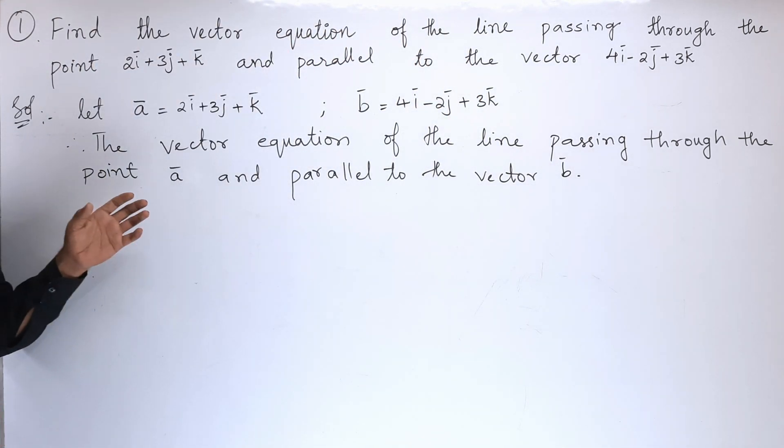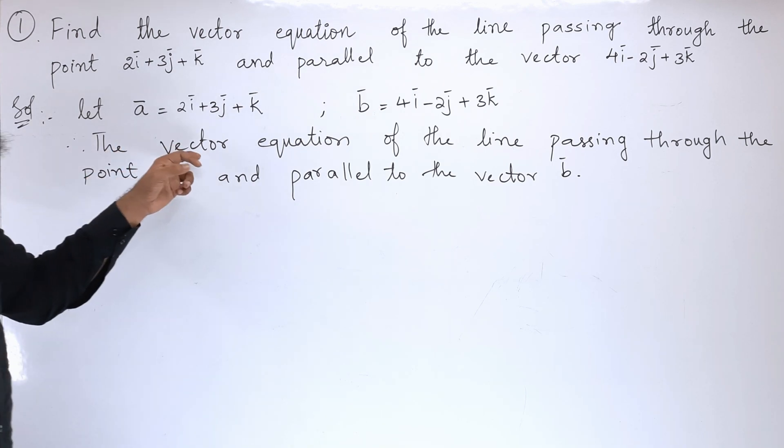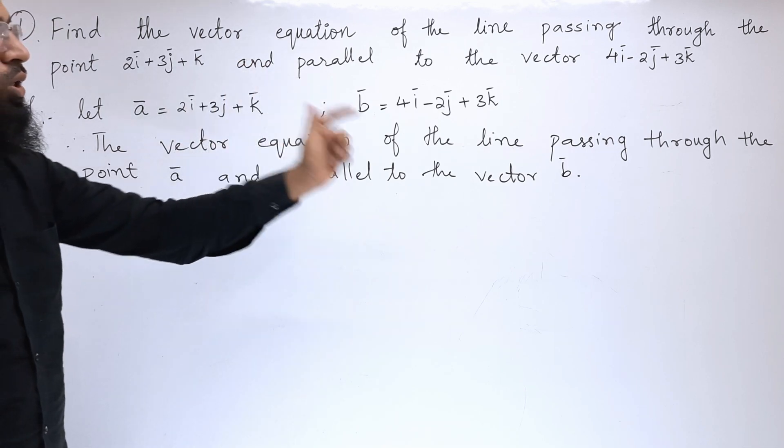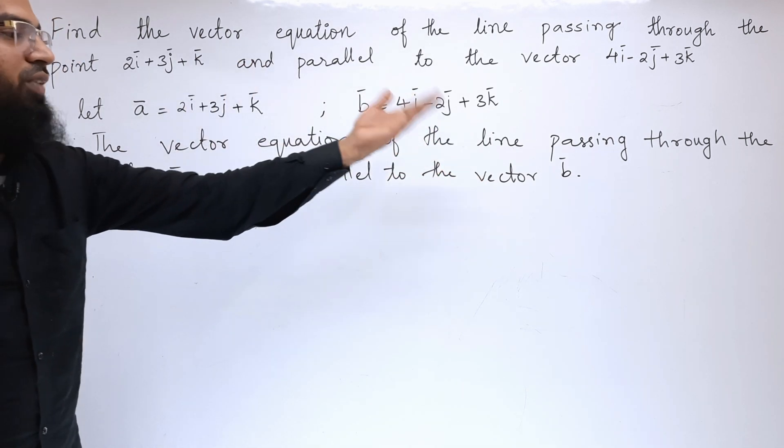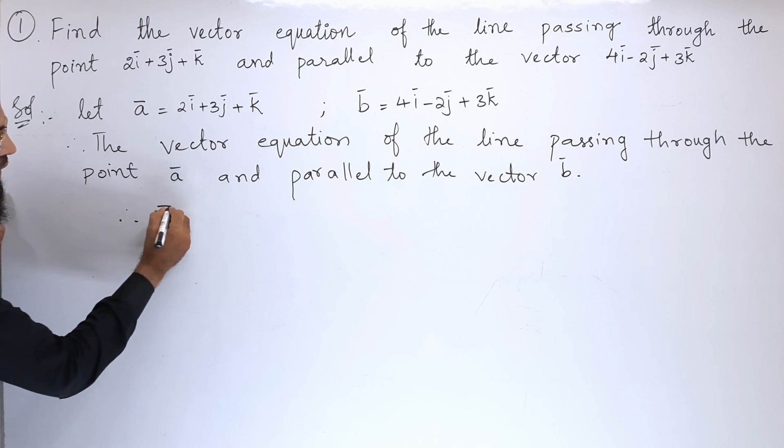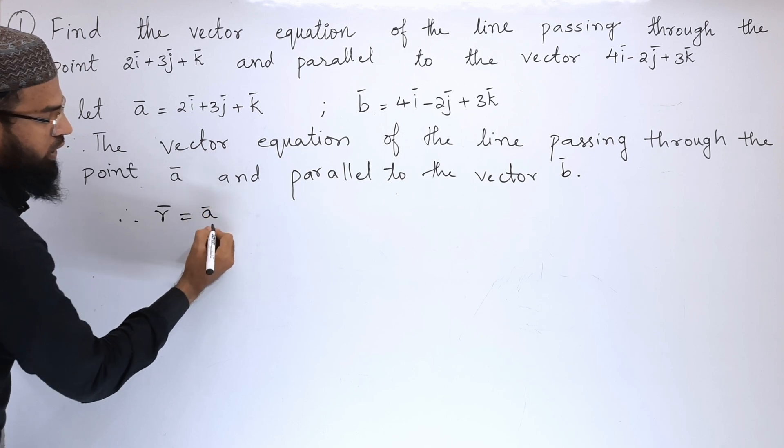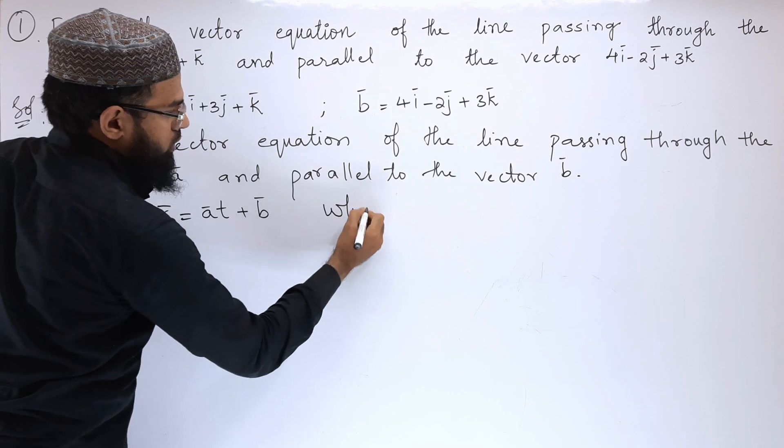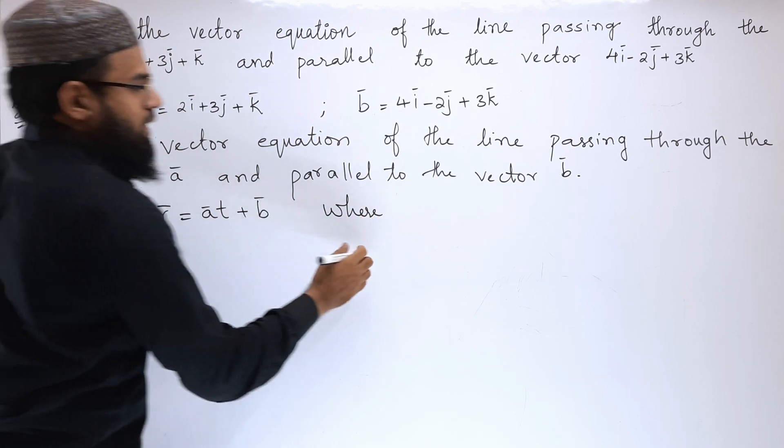We know the equation for this. The equation for vector equation passing through any point and parallel to another vector, the formula is: therefore, vector r equals vector a plus t times b, where t here is a scalar.